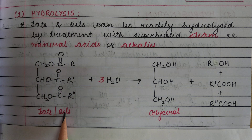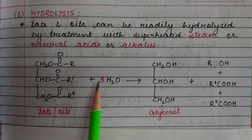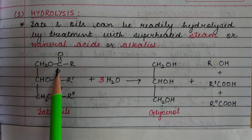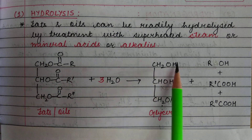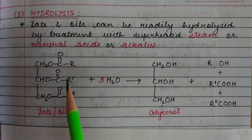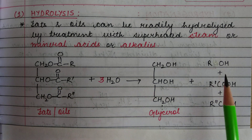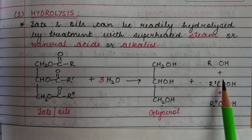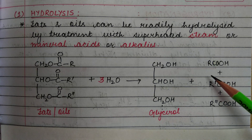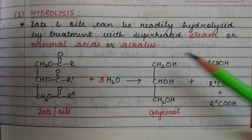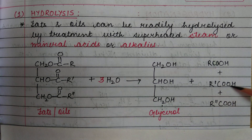For example, this is a fat or oil. When we treat it with water, it forms glycerol — that means all these groups are replaced by OH groups. And these R-COO forms acids, forming acids corresponding to different alkyl groups: R-COOH, R-COOH, R-COOH.